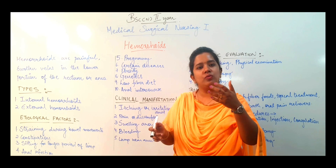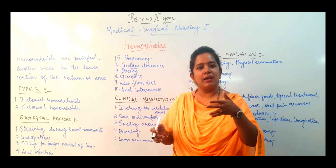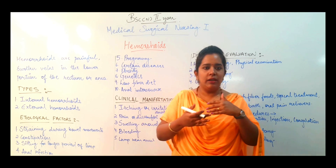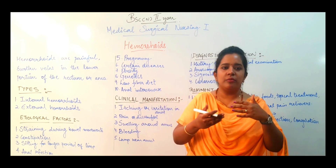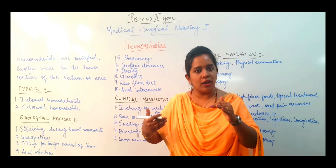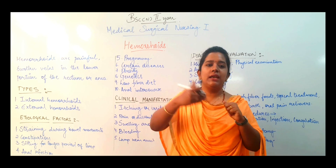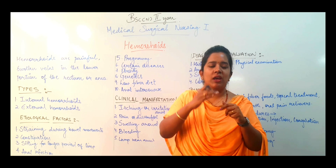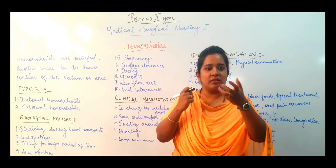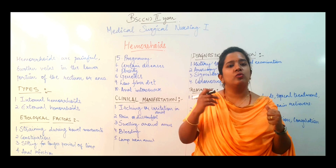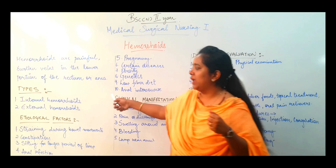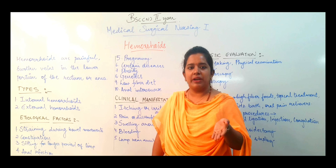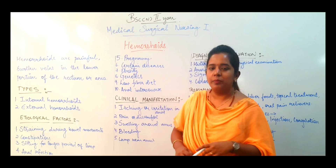Internal hemorrhoids are when the swollen vein is inside the body, in the anal or rectal region. But if the swollen veins of the rectum are protruding and hanging out of the body, we call it external hemorrhoids. So, related to location, we can divide hemorrhoids as internal or external.